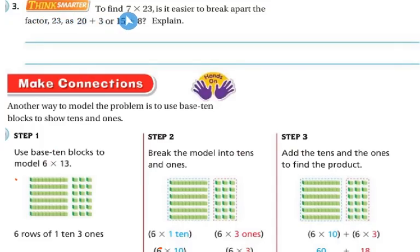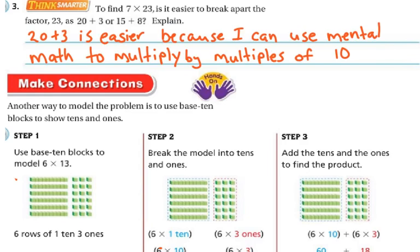Let's think smarter. To find 7 times 23, it's easier to break apart the factor 23 as 20 plus 3 or is it easier to do 15 plus 8? Let's explain. Well, for me, the 20 plus 3 is so much easier because I can use the mental math and I can multiply by multiples of 10, kind of like we were doing yesterday.